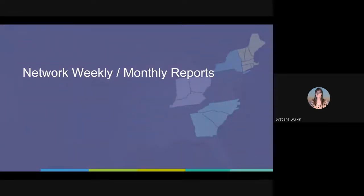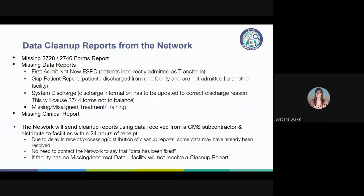The network receives CMS EQRS data, which is then formatted into facility-specific reports and distributed to the contacts on file. Your team may already be familiar with some of these reports as we try to send them weekly and/or monthly as appropriate. Facilities are expected to take immediate action on each UPI on the reports in EQRS, since incorrect data can have a negative impact on the patient's Medicare coverage and transplant waitlist status. There is no need to notify the network once corrections have been made — we will know when we run the next round of reports. If you need assistance, please open a FreshDesk ticket and include the UPI, report name, and date received.